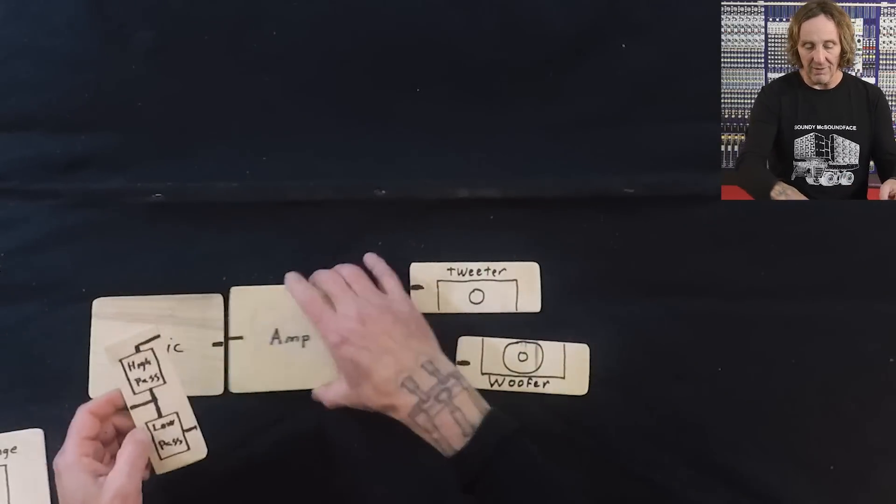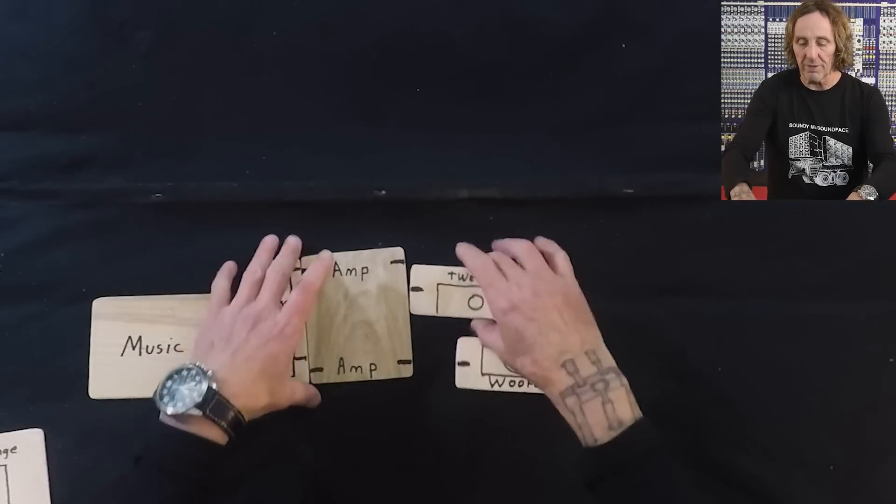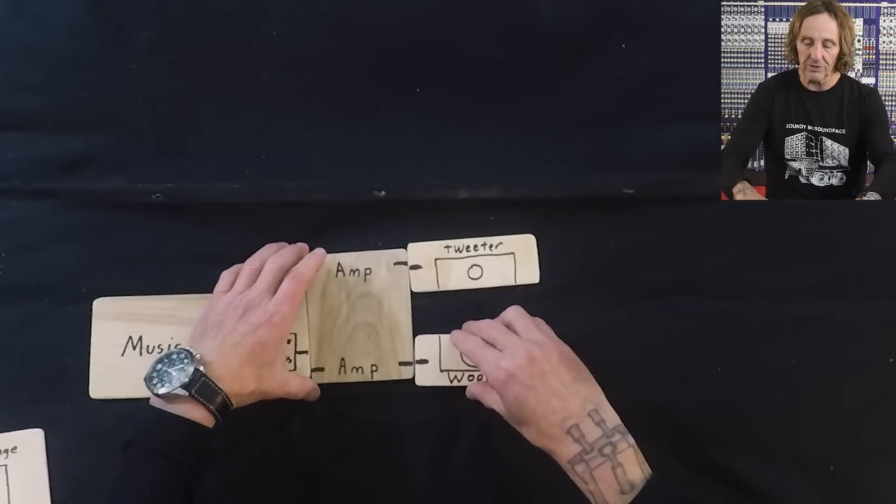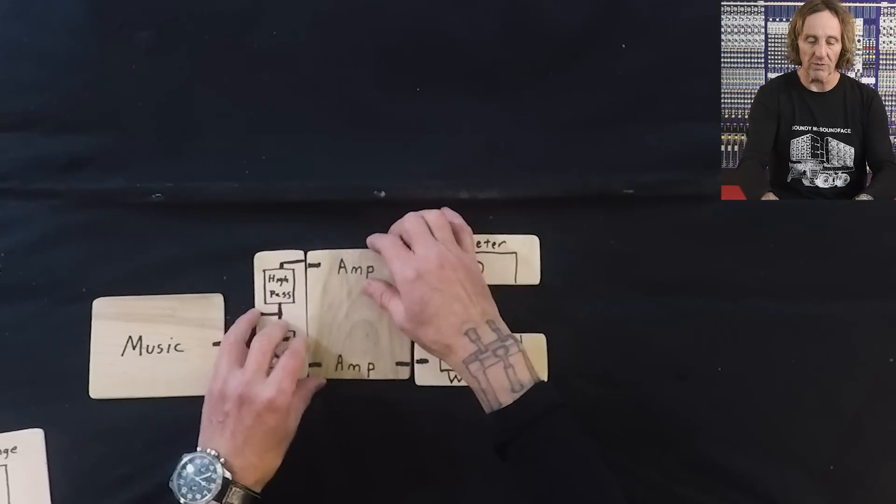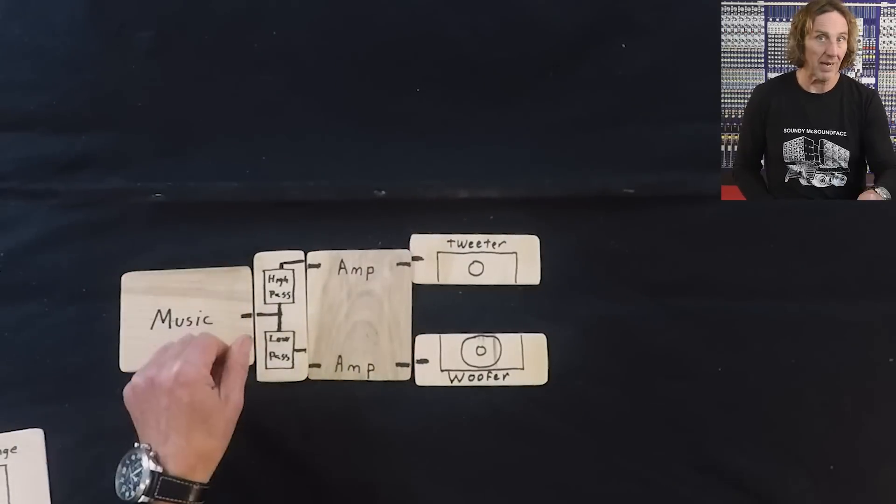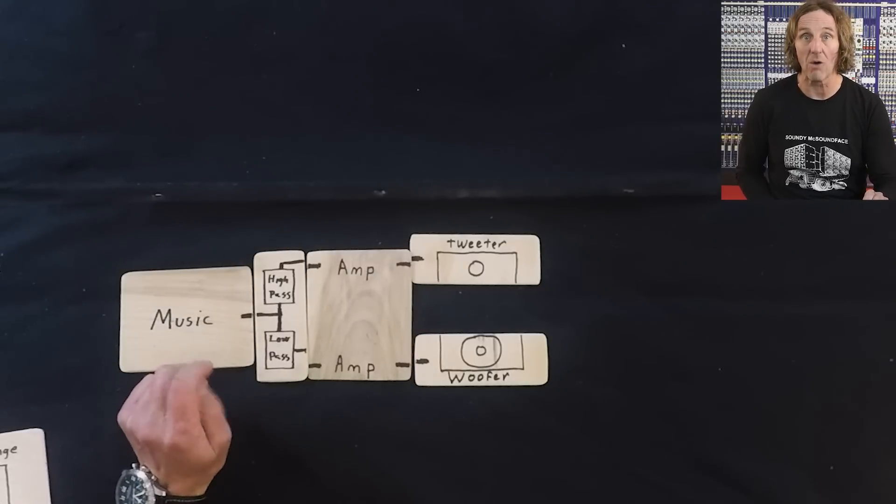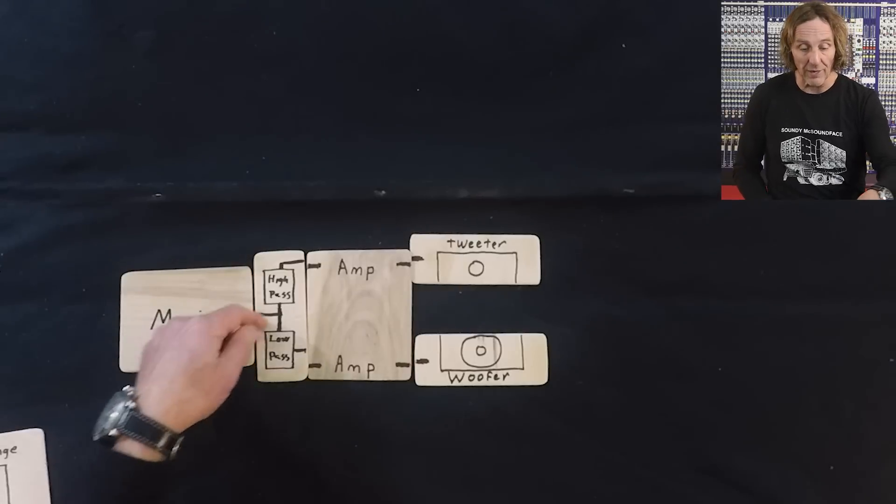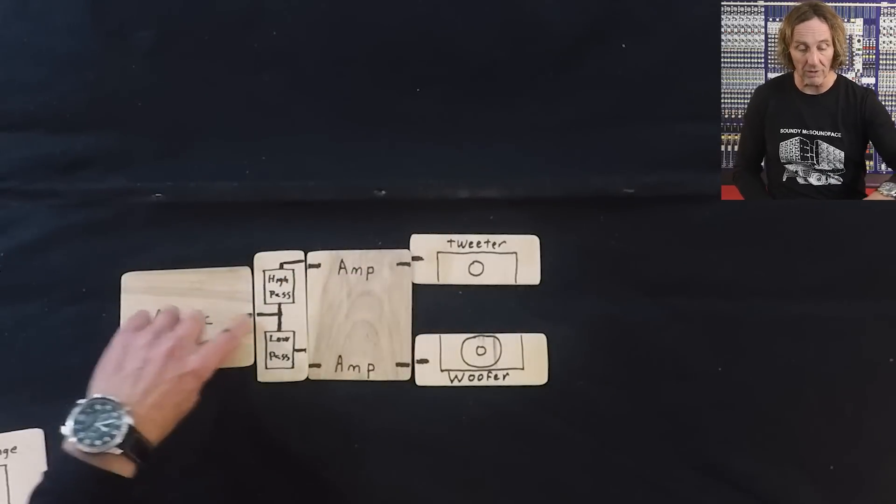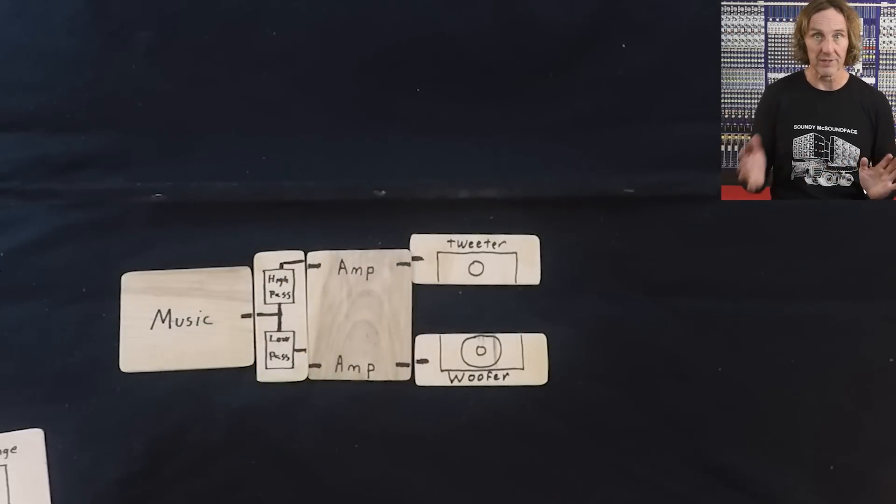So instead of taking and putting the crossover inside of the speaker cabinet, let's put the crossover before the amplifiers and use two separate amplifiers. This is what we call bi-amplified. Bi-amplification is where we divide the frequencies up before the power stage. So the high frequencies go to the high frequency amp, the low frequencies go to low frequency amp.